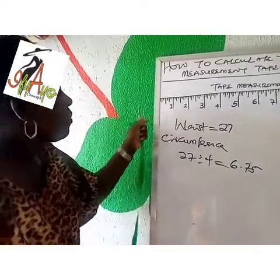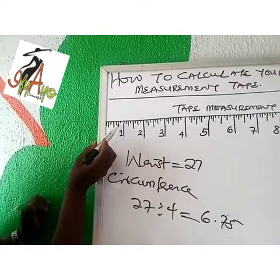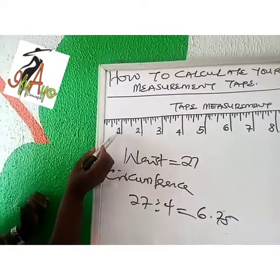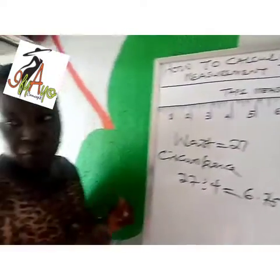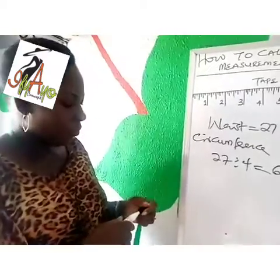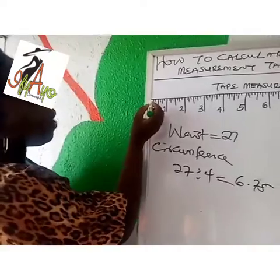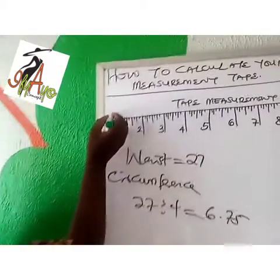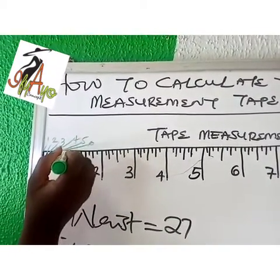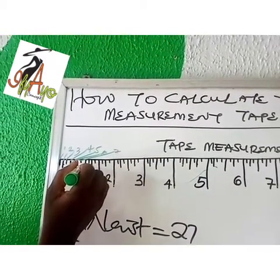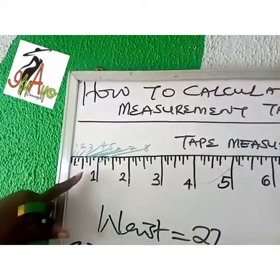Let's go back to the measurement tape. If you count with me: 1, 2, 3, 4, 5, 6, 7, 8. Eight decimal divisions make up 1 inch on your tape measure. I'll be using my green marker to calculate it for us.